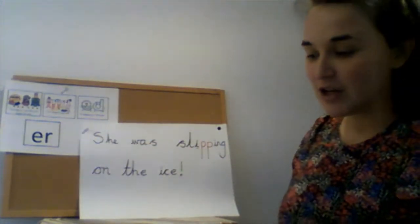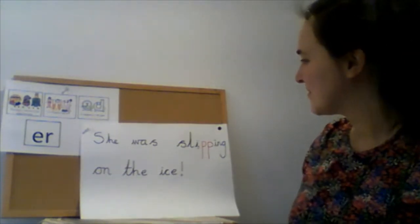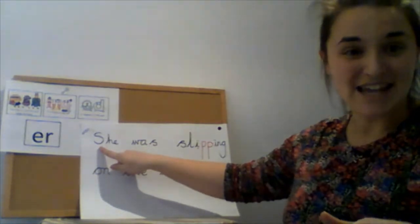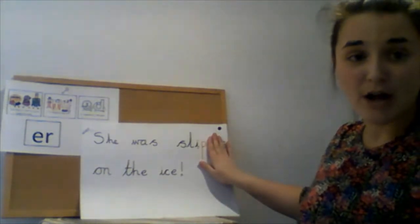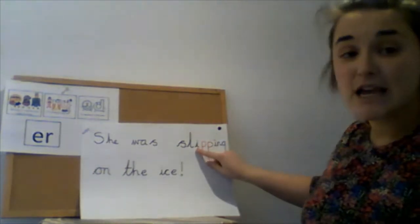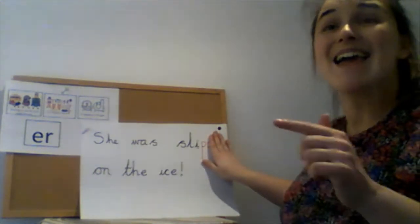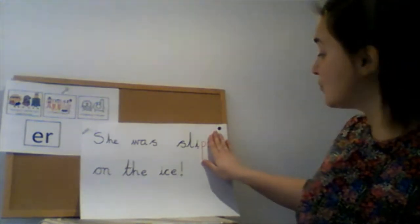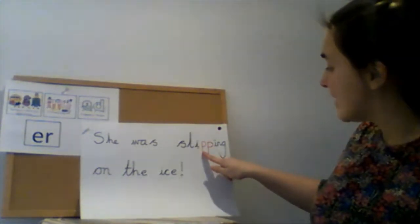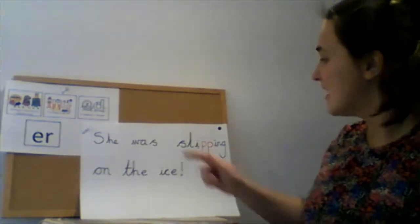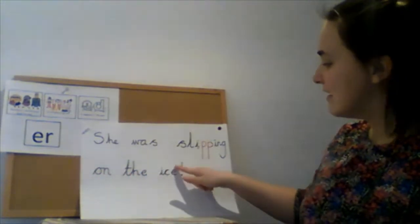Here it is on my board. You might want to compare it to yours and see if you got the word 'slipping' correct. She was — I've started with a capital letter, have you? She was slipping. 'Slip' is the root part of the word. L-I — I can hear a short vowel, there's that I sound, right before the last letter P. Because I can hear that short vowel, I know I need to double the P — double the last letter in the root part of the word — then I can add my suffix to the end.